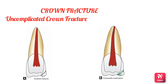If the fracture fragment of the crown is available, reattachment of the fragment can be done by beveling and etching the enamel and placing it onto the tooth structure. This technique may compromise aesthetics because of the internal resin composite present.